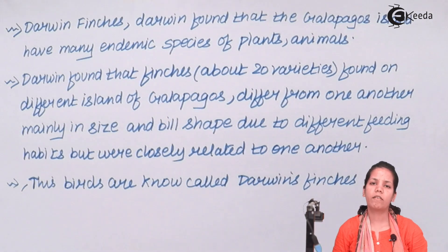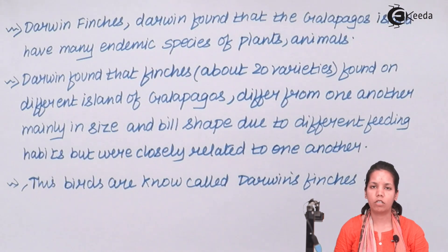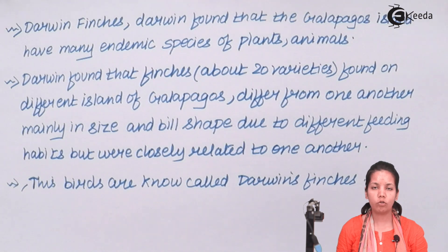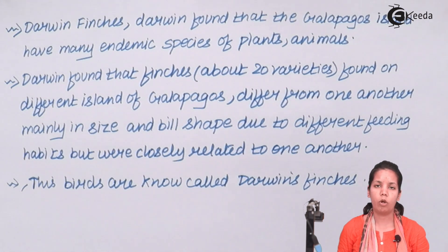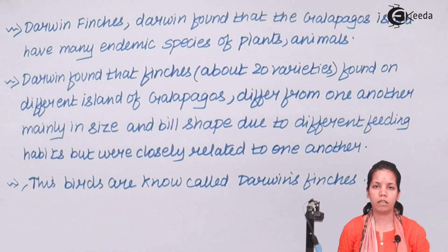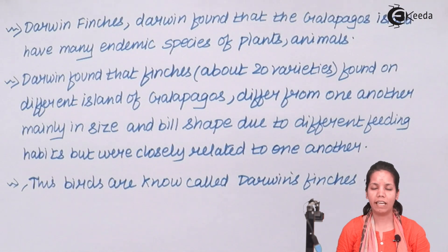What we studied was about adaptive radiation and how adaptive radiation clearly shows that your eating habits or food habits may be similar in species that belong to the same category, even if they live in different parts of a particular community. I hope students we are all very clear with this concept. Thank you.